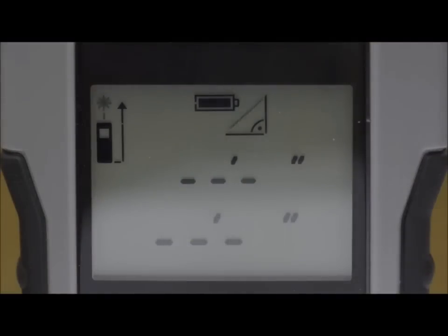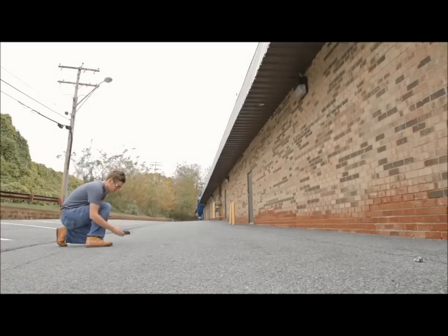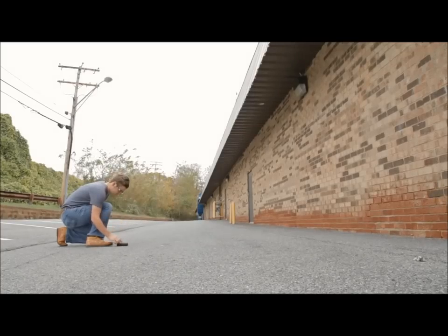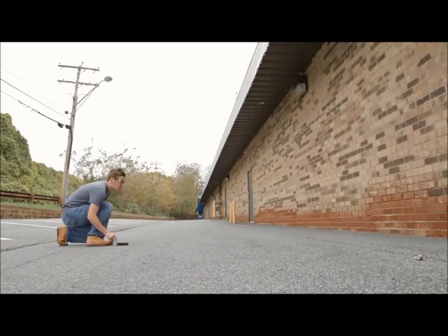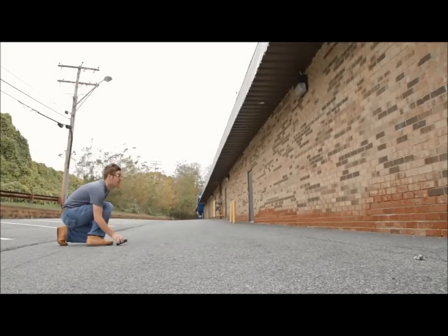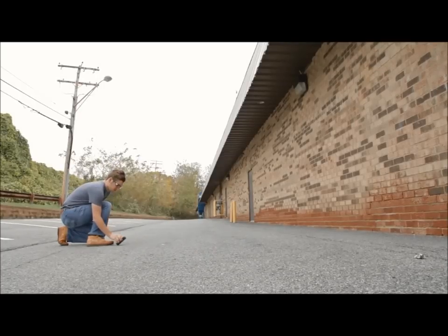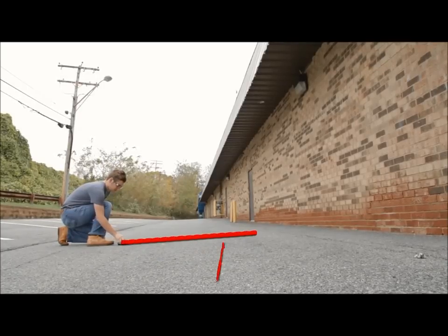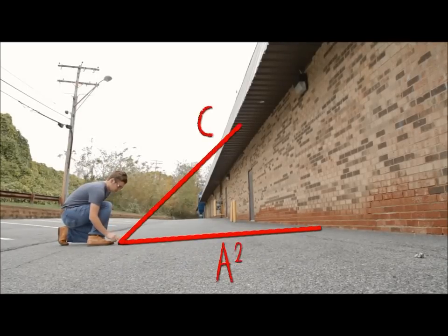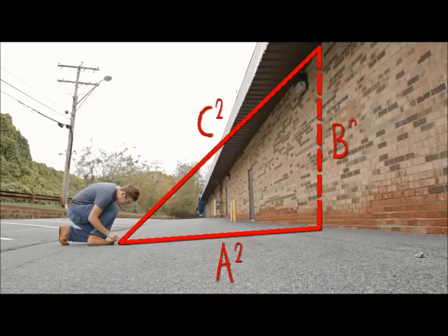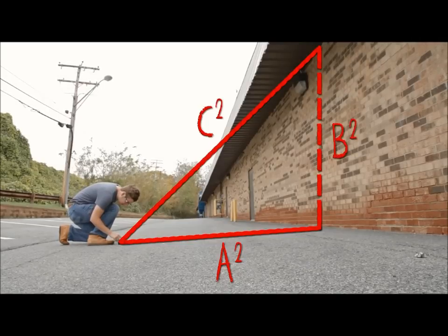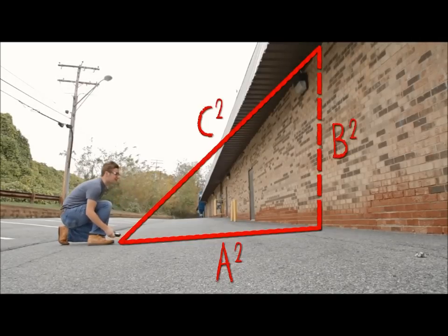Pythagoras 1 is used when measuring a building. The user can step away, point the LDM to the bottom of the building and then at the top. Essentially, you are making a triangle between yourself and the building and measuring two sides, leaving the LDM to calculate the third. The height of the building is automatically calculated for you.